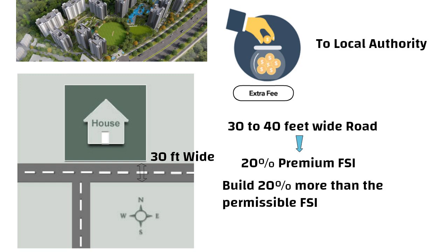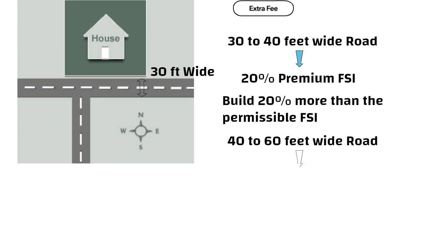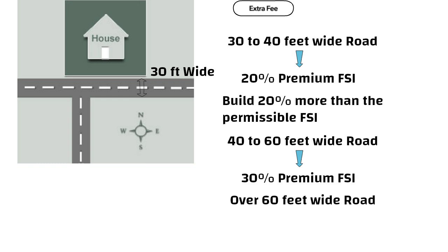Likewise, if there is a 40 to 60 feet wide road adjacent to the plot, then you can avail a 30% premium FSI. And for plots that are abutting a road over 60 feet wide, the premium FSI is 40%.